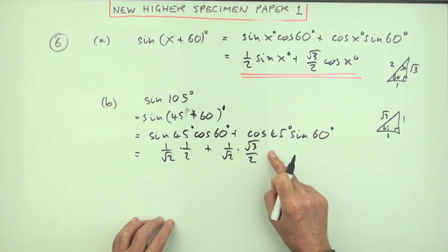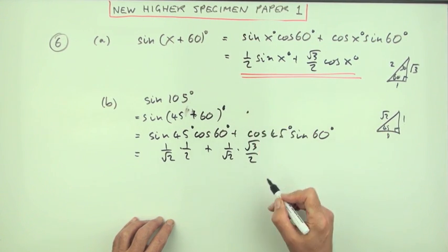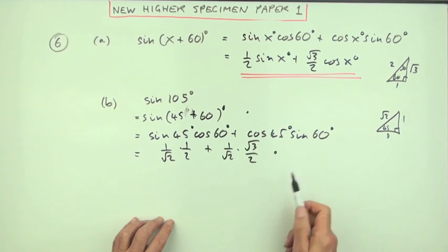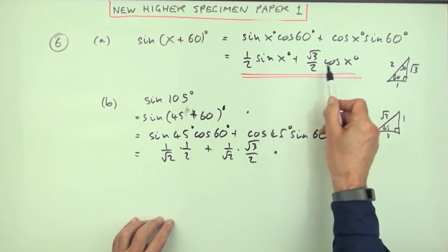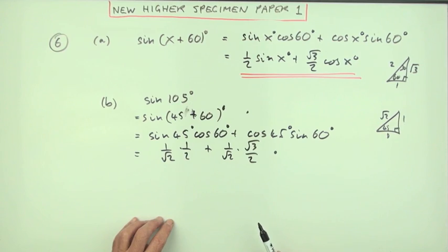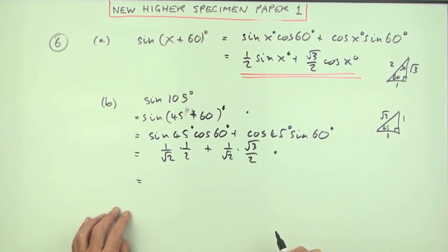Now looking at the marking scheme, that was the first mark for breaking it, that was the second mark. So maybe I could just have used that result there or this result up here, and then finally just put it together for the last mark.